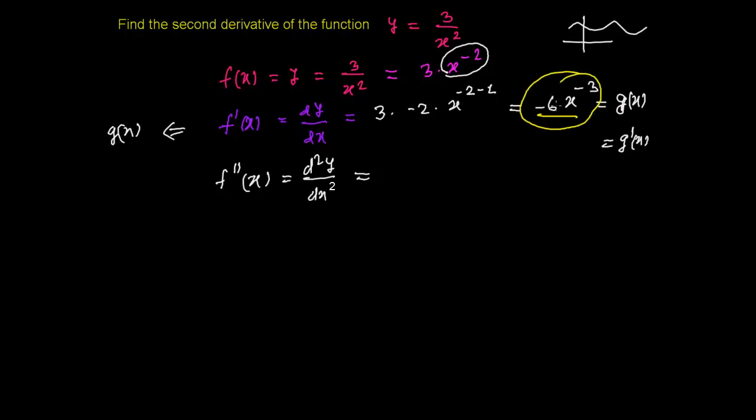Since minus 6 is the coefficient here, let me first write minus 6 times - and now I'm just going to talk about x to the power minus 3 and I'm going to use the power rule. So power is minus 3 times the base and the power will be reduced by 1. So what we get for g prime of x? This is now minus times minus which will be plus, so it will be 18 x to the power minus 4.